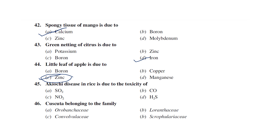Akiochi disease of rice is due to sulfur dioxide toxicity — it was likely first discovered in Japan, hence the Japanese name. Cuscuta belongs to the family Convolvulaceae.